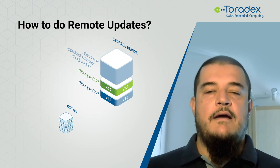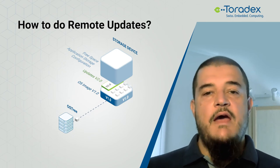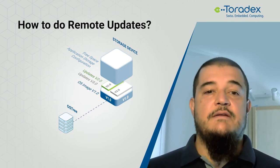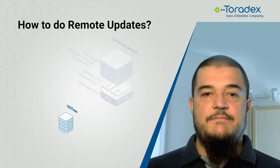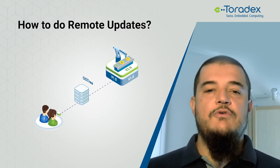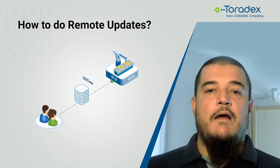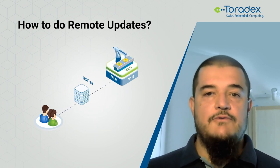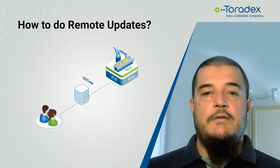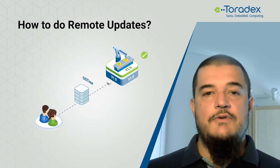OSTree works differently — it keeps a repository of all the files in all their different versions, and the actual file system is built with hard links to those files. This means you may have more than just two versions on the device, and that usually takes much less space than the two full copies required by the previous system. OSTree applies its changes at boot, and if something goes wrong and the system can't fully boot, it can revert back to the previous version on the next reboot. With OSTree, you only need to transfer the files that changed between two versions, which helps save bandwidth. Data can be transferred in the background without affecting the current system operation, meaning downtime during reboot can be minimized.